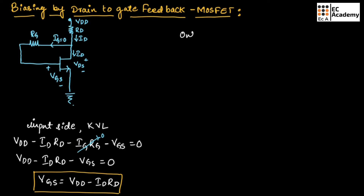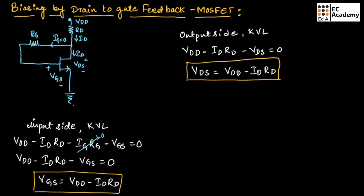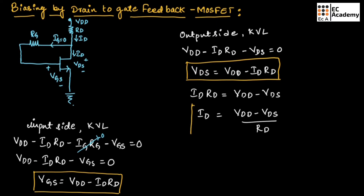Now let us consider the output side and apply KVL. Applying KVL to the output side gives: VDD minus ID·RD minus VDS is equal to 0. From this, the expression for output voltage is VDS = VDD minus ID·RD. From this equation, ID·RD = VDD minus VDS, so the expression for output current is ID = (VDD minus VDS) divided by RD.